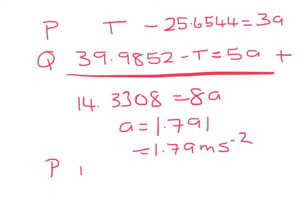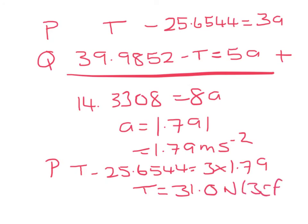Substituting into the equation for P, T minus 25.6544 equals 3 times 1.79. It gives a tension of 31.0 Newtons to 3SF.